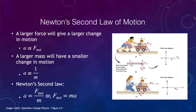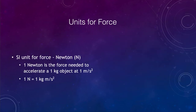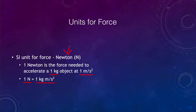The unit for force is named after Sir Isaac Newton — the Newton. A Newton is the force needed to accelerate a one-kilogram object at one meter per second squared. So one Newton equals one kilogram meter per second squared. When balancing units, one Newton is a kilogram times meter per second squared.